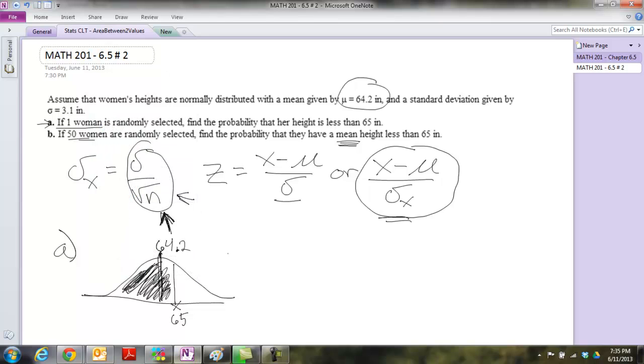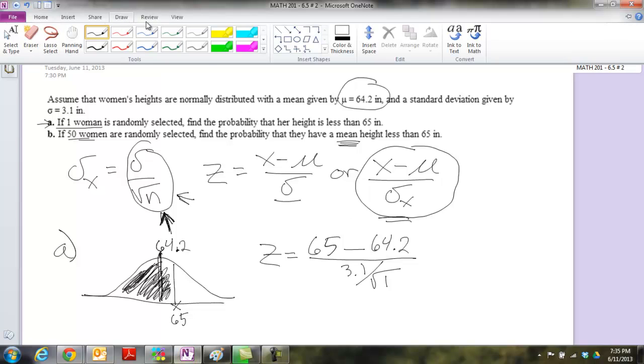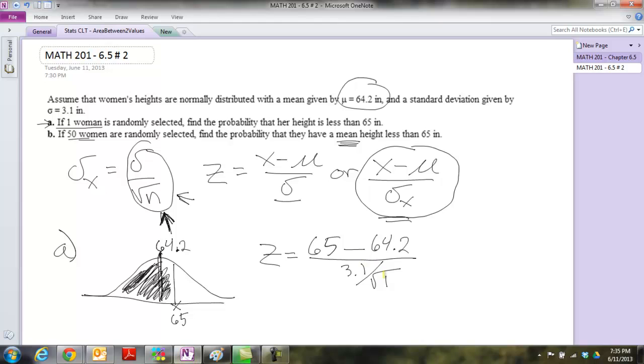And if we want to find the area below this, we need to find the z-score, then we need to look that z-score up on the table. And so, we go, alright, z equals the x that we're concerned with, which is 65, right, minus our mu, 64.2, divided by our sigma, 3.1, over square root of our sample size, which in this case is 1. And that whole piece there, and all of this, ends up being useless, in this one case, because we have a sample size of 1.